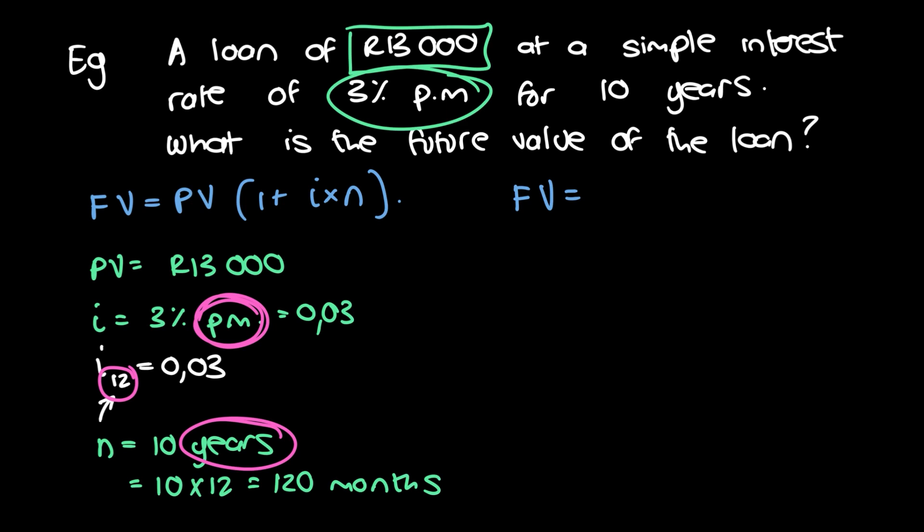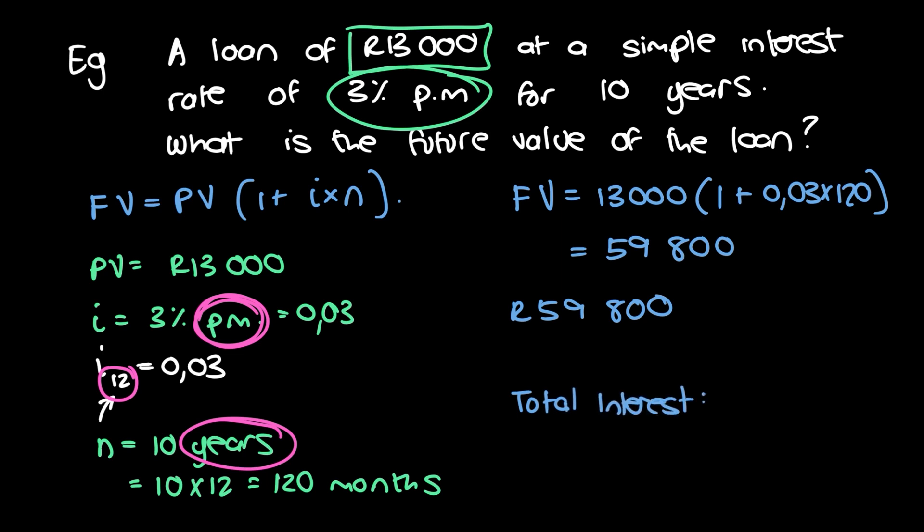So we have our future value is equal to 13,000 brackets, 1 plus 0.03 times by 120. And that's going to give us 59,800 Rand, right? We could work out what the total interest that we would have to pay for the loan. And that's just going to be the 59,800 Rand minus 13,000. So the total interest, so how much it actually cost us to take out this loan and use that money is 46,800 Rand. And we ask for what.